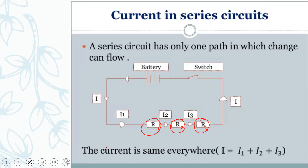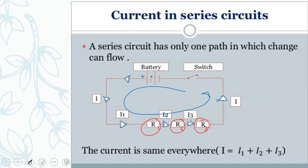The current will have one flow — only one path. Here we have a positive terminal and a negative terminal, so the current goes from positive to negative out of the battery and flows around the circuit like this.